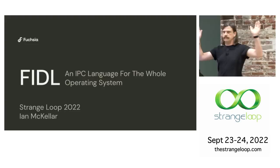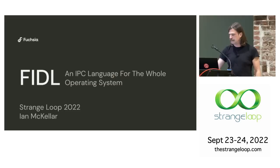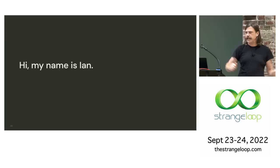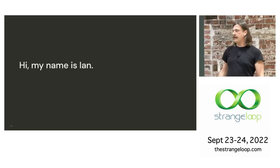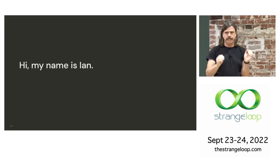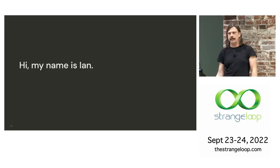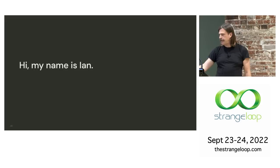Hi. Welcome to Strange Loop. Hope everyone had coffee. Welcome to my talk. My name's Ian. I use he/him pronouns. I am originally from Australia, but now I live near San Francisco with my wife and kids. I think of myself as a startup person, but I've been at Google for over 10 years and spent the last seven or so working on Fuchsia.